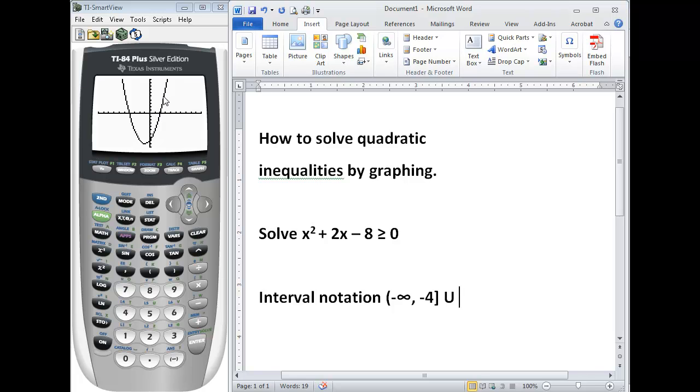Then our graph is also positive on this side of our graph, so starting at that x-intercept again, which is positive 2.